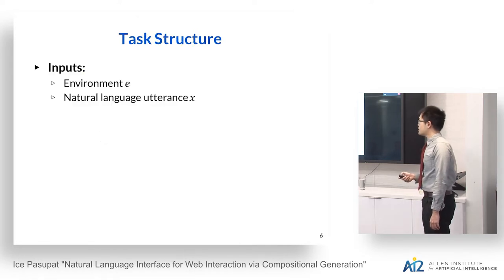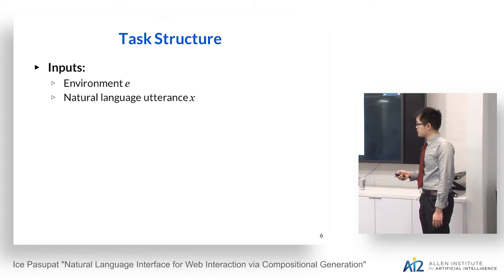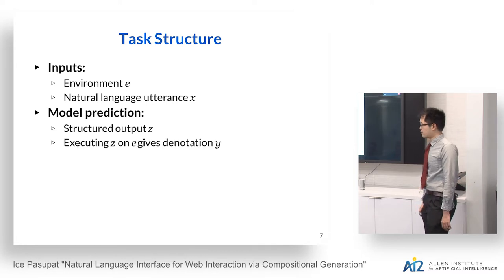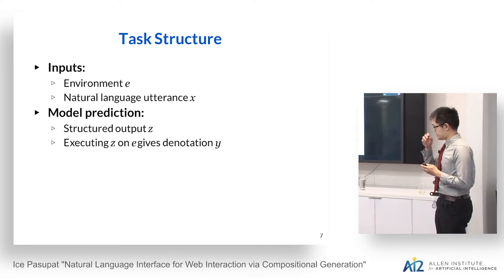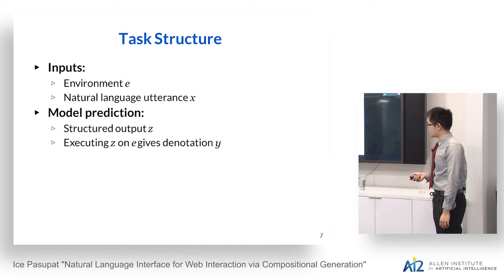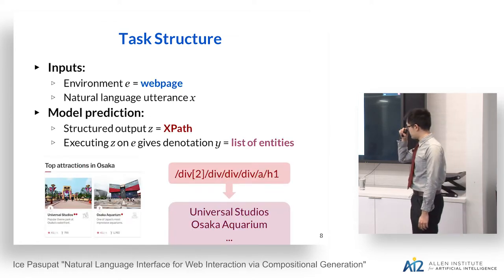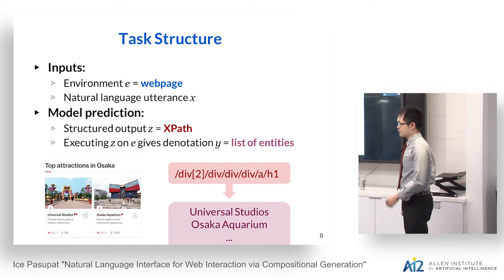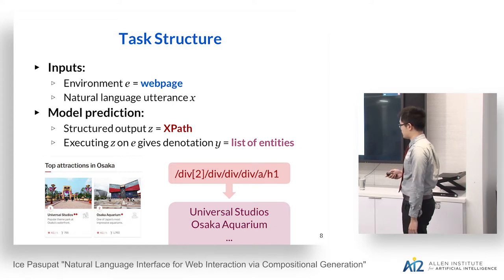In all these tasks, there is a common task structure. We have an environment E and some natural language input X. We want the model to output some structured output Z. Executing Z on the environment gives something called denotation Y. For entity extraction, the environment is a web page, the structured output is an XPath selector, and executing it gives you a list of strings.